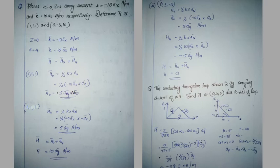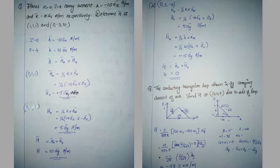If we add az, we consider the z equal to 4 plane. We add a vector in the minus direction, giving minus az. Then ax cross az gives minus ay. Since there is already a minus, the two minuses cancel. The final expression is 5 ay cap amps per meter. Adding minus 10 and plus 10 gives the summation h0 plus h4.